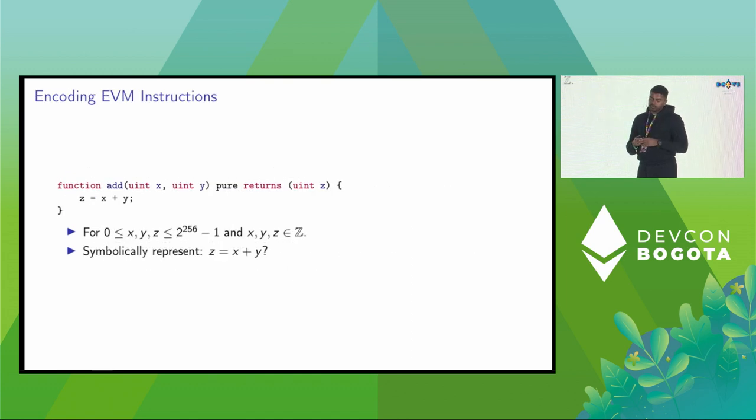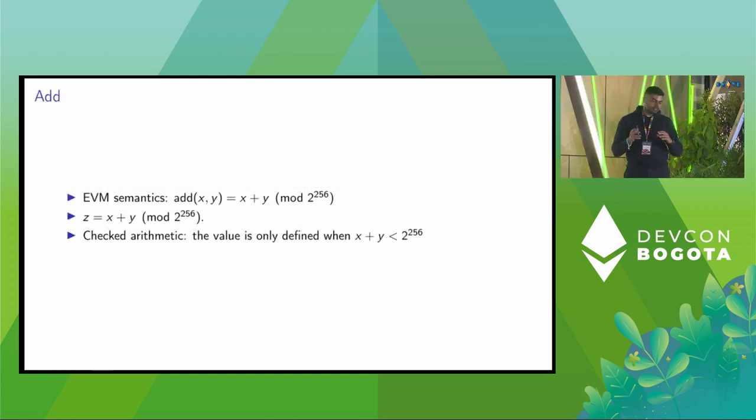Now let's think about how do we encode some EVM instructions. Perhaps the most fundamental EVM instruction is addition. You take two numbers and add them and leave it at the stack. How do we symbolically represent the addition, X plus Y? What do you think? Is it just X plus Y? Unfortunately, it's not that simple. If you look at the EVM semantics of addition, addition is defined by X plus Y modulo 2 raised to 256. And if you look at high level solidity code, since 0.8.0, we have the checked arithmetic. So X plus Y would revert if X plus Y is greater than or equal to 256. We are already seeing that it's not that simple to encode add. It's doable, but it's not the easiest.